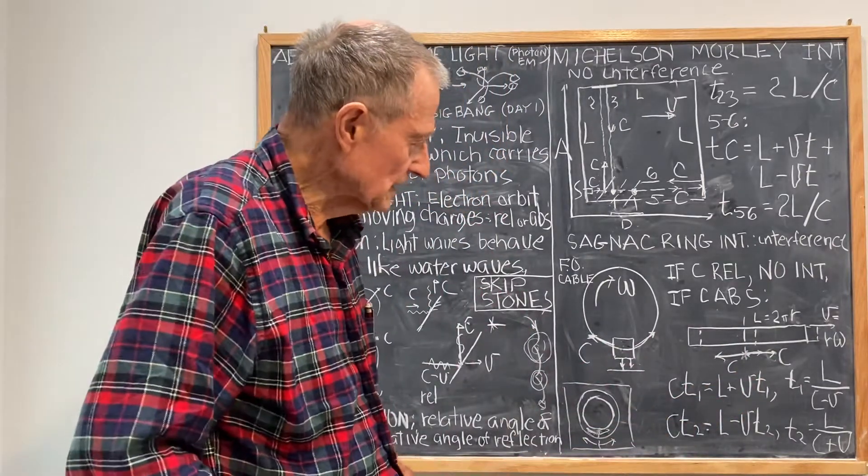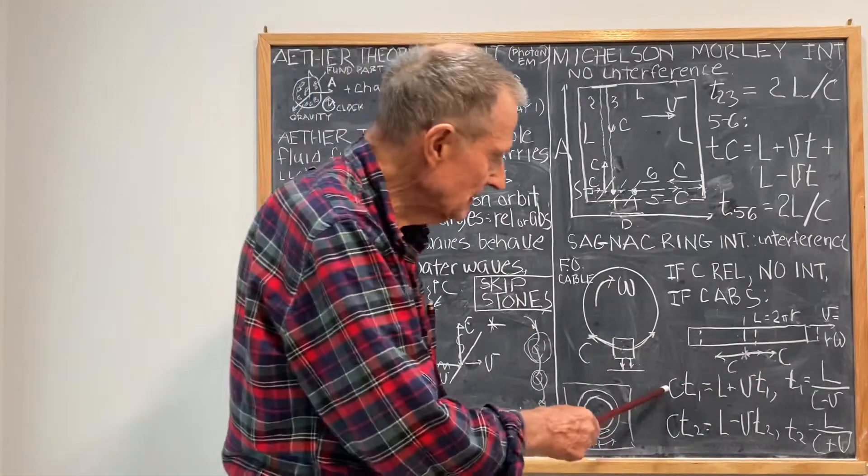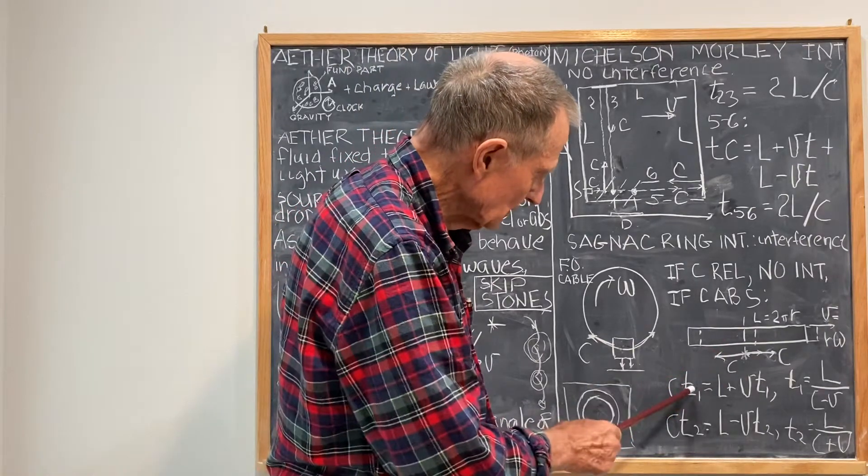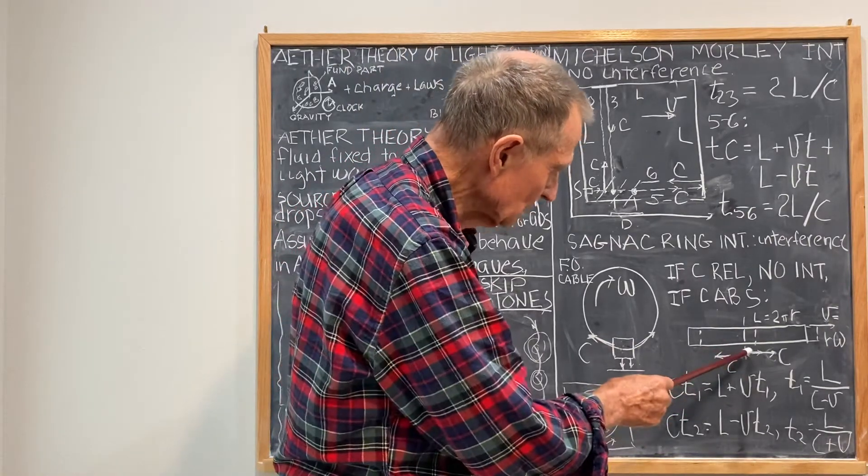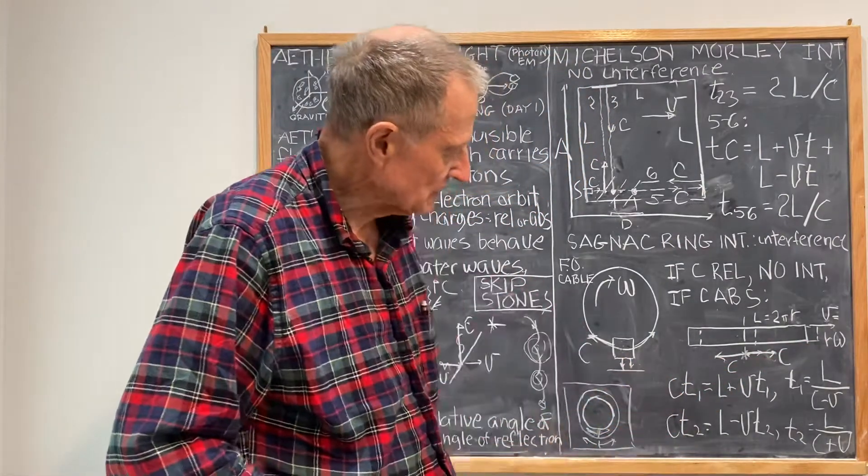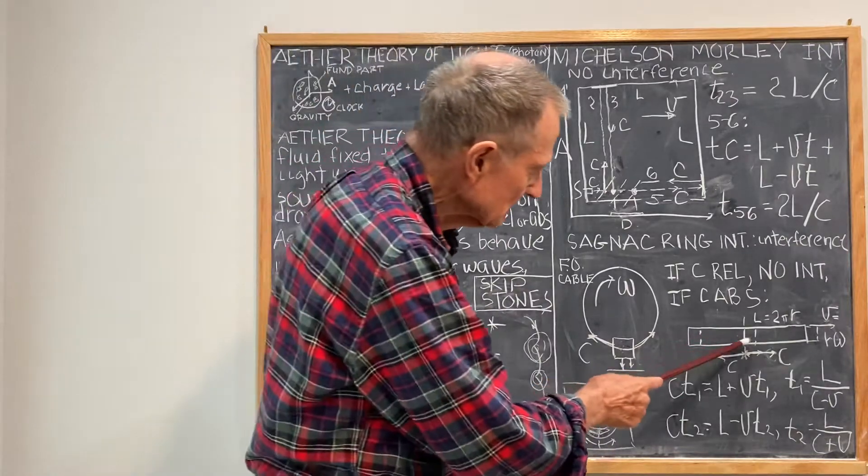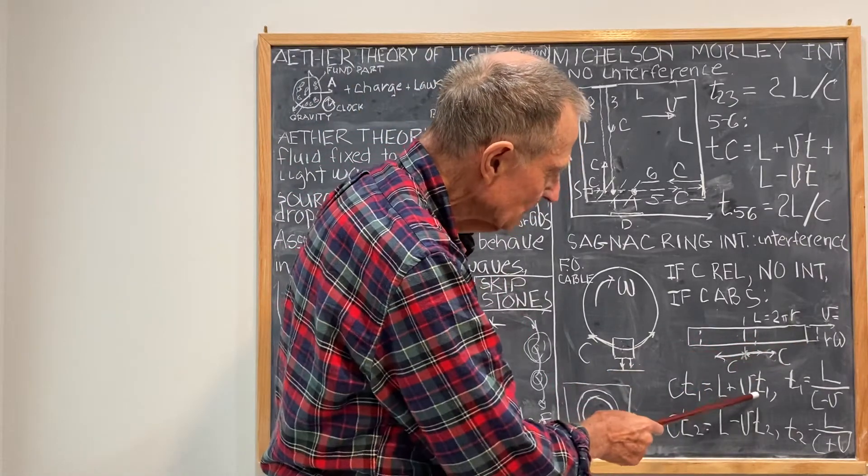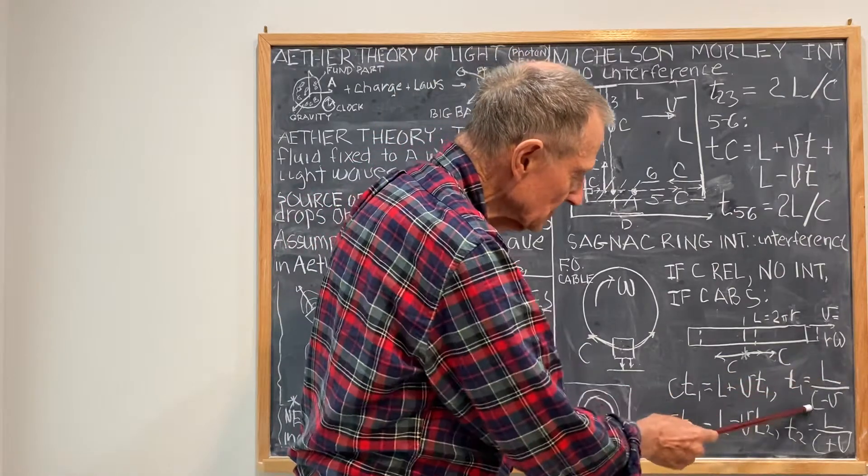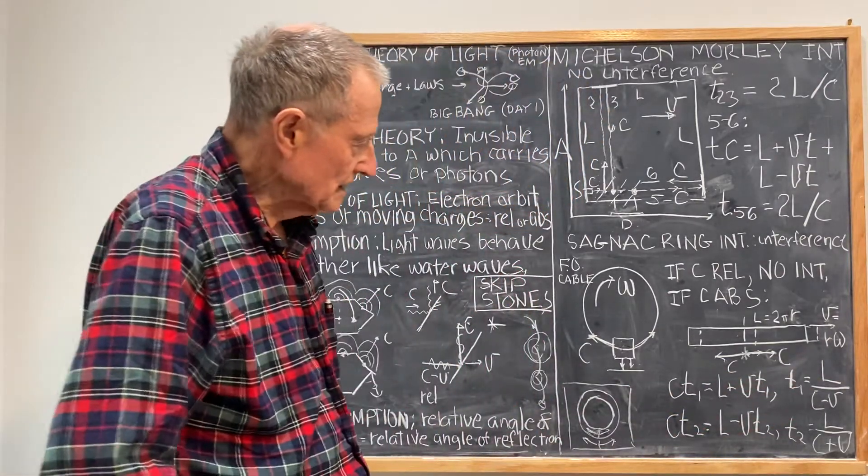Once that model is clear, then the results follow quite easily. I have that C times the total time of travel for this photon to reach the end of the train is equal to the C times T1 is equal to the total travel, which is the length L, plus V times T1, from which you get that T1 is L over C minus V. And for the other direction.